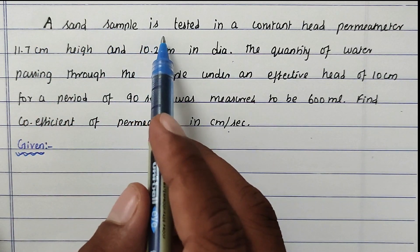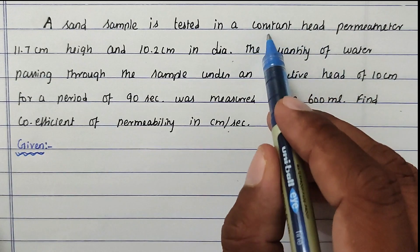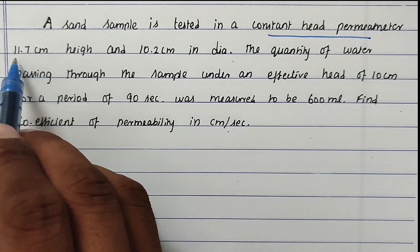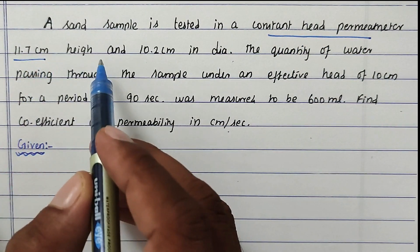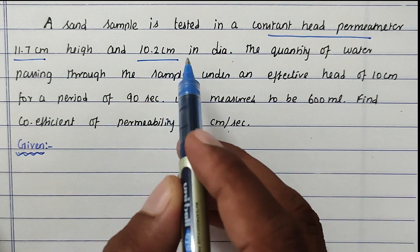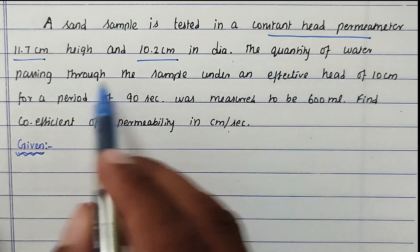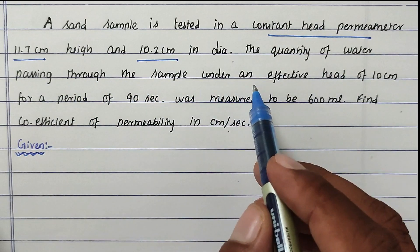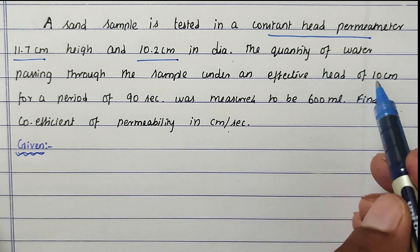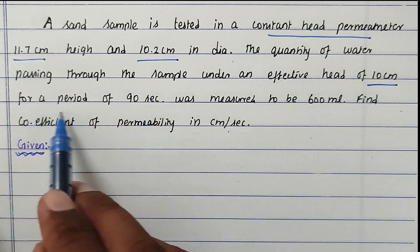The problem is: a sand sample is tested in a constant heat permeameter, 11.7 cm height and 10.2 cm in diameter. The quantity of water passing through the sample under an effective heat of 10 cm for a period of 90 seconds was measured to be 600 ml.